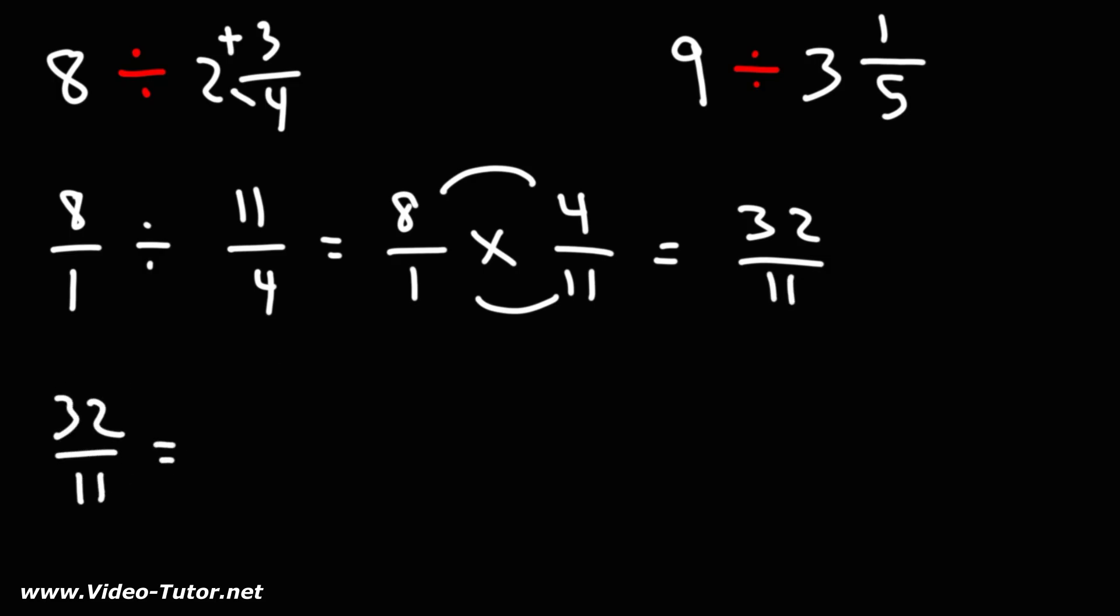Now, 32 over 11. To convert this improper fraction to a mixed number, we can break it down into 22 over 11 plus 10 over 11. 22 is the highest multiple of 11 just under 32. That's why I chose that number. 32 minus 22 is 10.